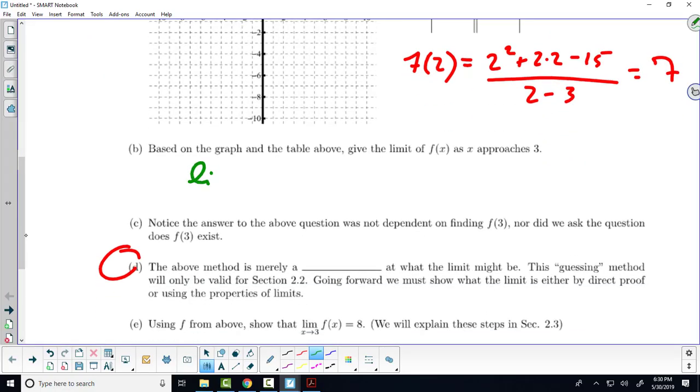We would write the limit as x approaches 3 of, here I'll actually write it out. It was x squared plus 2x minus 15 all over x minus 3, right? That was our function. As x approaches 3, this expression right here, the output approaches 8.